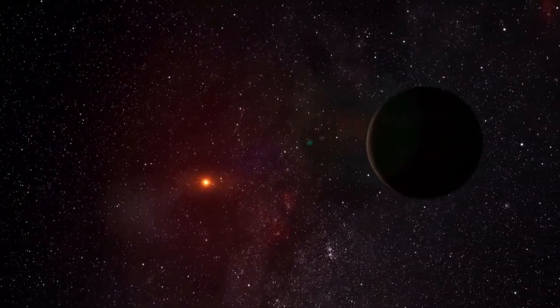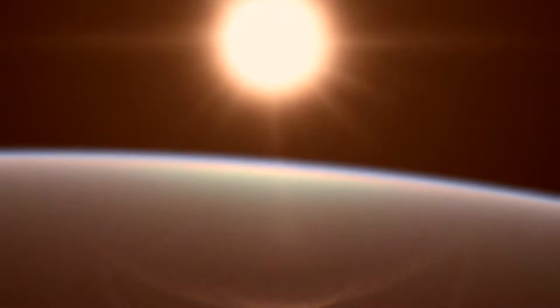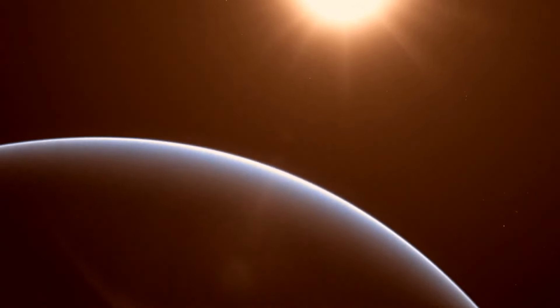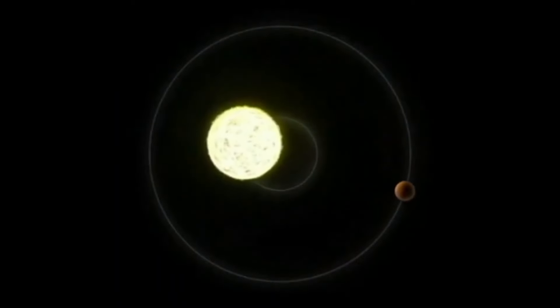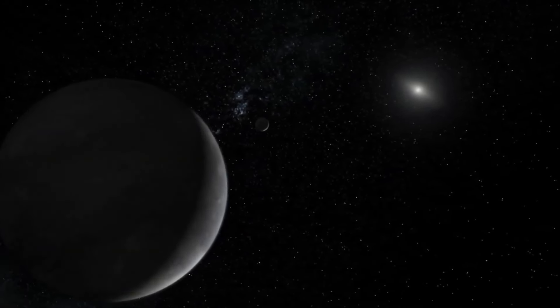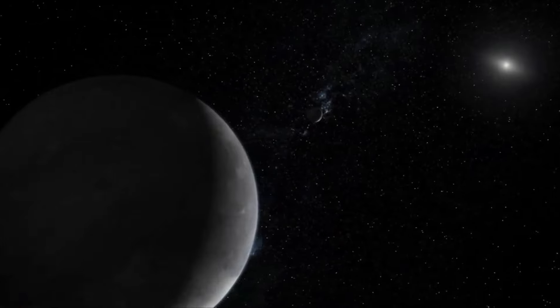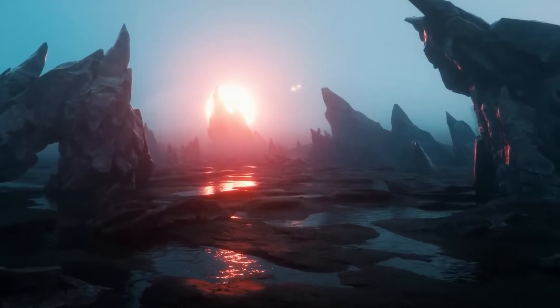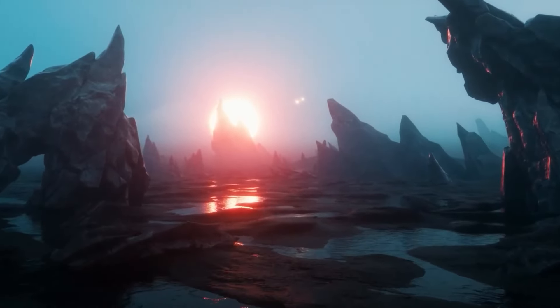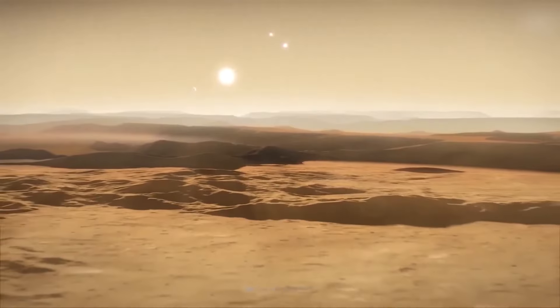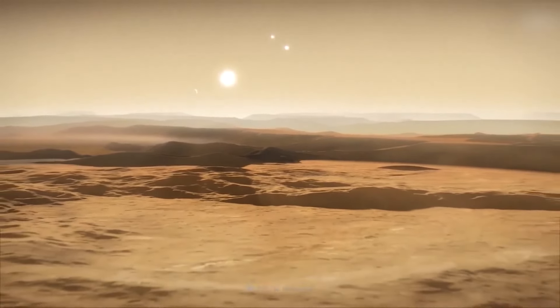Proxima Centauri is a red dwarf star with only a fraction of the mass of the sun. Because of their small sizes, the nuclear fusion cores of red dwarf stars are much closer to their surfaces. This makes their surfaces much more chaotic than stars like the sun. And that increased turbulence amplifies incredibly strong magnetic fields. In turn, those strong magnetic fields can launch extremely strong blasts of high energy radiation and particles into the surrounding system.